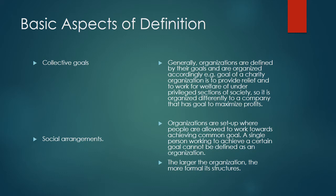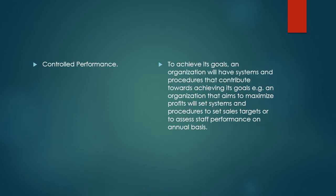Social arrangements — organizations are set up where people are allowed to work towards achieving a common goal. A single person working to achieve a certain goal cannot be defined as an organization. As far as structures are concerned, the larger the organization, the more formal its structure. Controlled performance: to achieve its goals, an organization will have systems and procedures, for example setting sales targets or assessing staff performance on an annual basis.